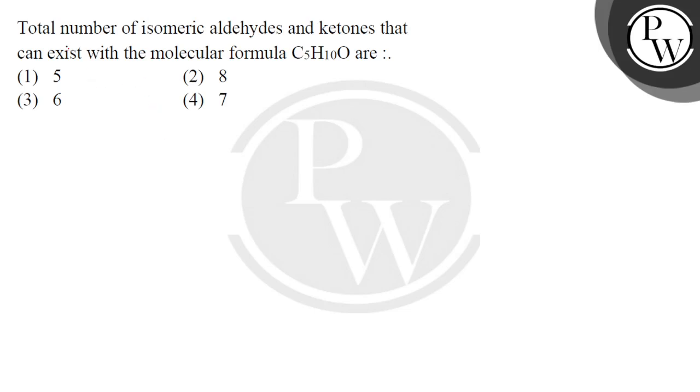Hello students, our question is: what is the total number of isomeric aldehydes and ketones that can exist with the molecular formula C5H10O? We have the formula C5H10O and we will determine how many possible aldehydes and ketones can be made.